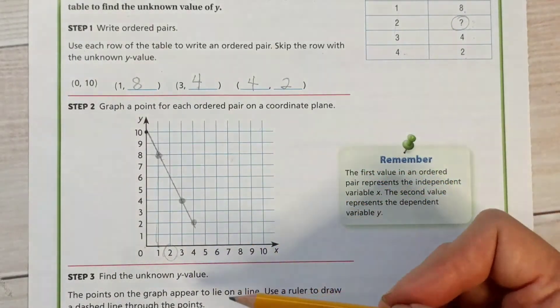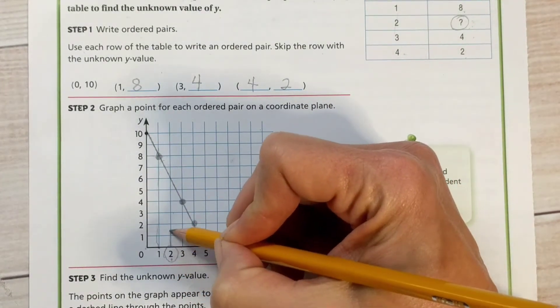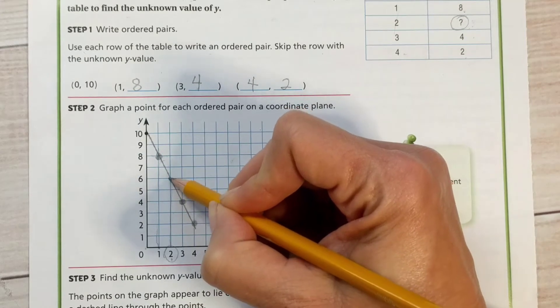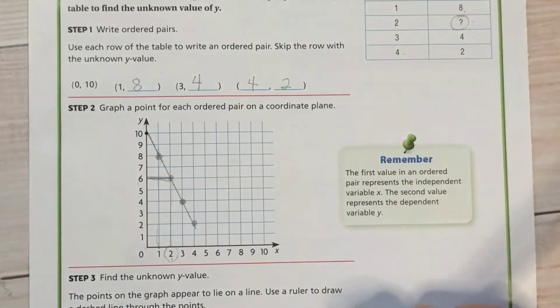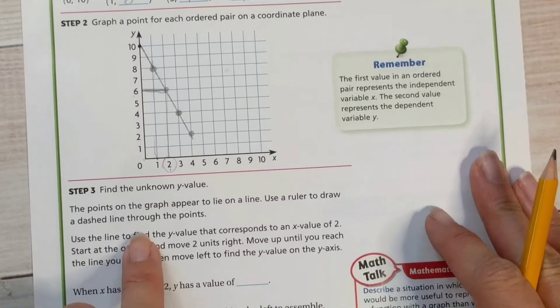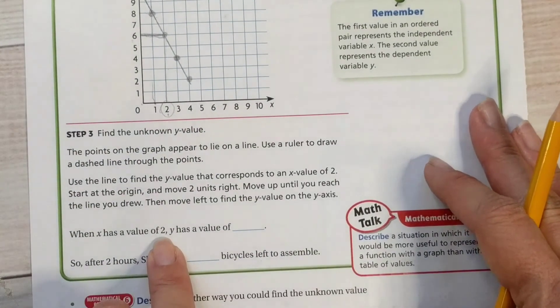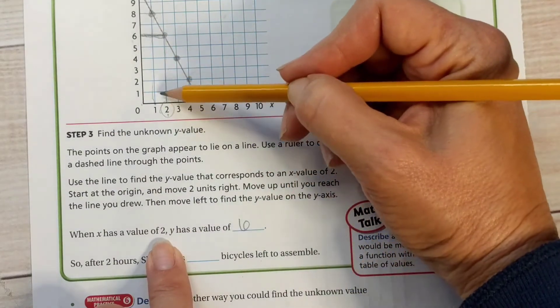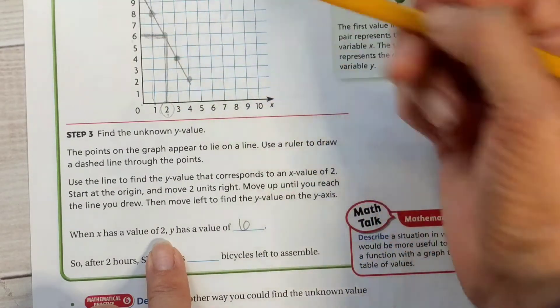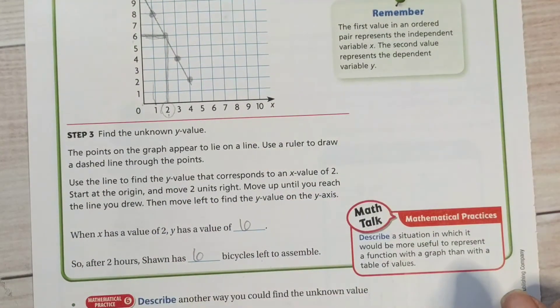And we discover what the value of 2 is at two hours. How many bikes did he complete? Let's go all the way up and look at that. How many did he complete? Six, or he had six left. Alright, so we found the unknown value. When x has a value of 2, y has a value of 6. Right here, 2, 6. So after two hours, Sean has six bicycles left to assemble. Nice job. We'll do one more example.